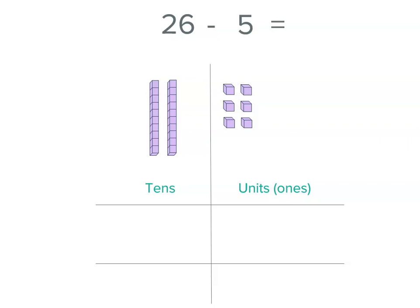Now, let's write our total in. We've got 2 tens and 6 units. And then we're subtracting 5 units. We're not subtracting any tens. So if you want, you could put a 0 there. It doesn't change the value of that number. But if you think it would help you, write a 0 in.